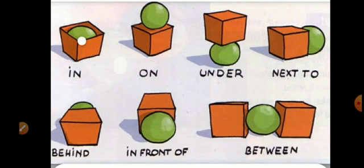These are all prepositions shown in pictures. First is 'in' — यह show कर रहा है कि जो box दिया है, उस box में ball है. So 'in' means box में — ball is in the box. Then 'on' — ball on the box, means जो ball है वो box के ऊपर है, इसलिए on box.